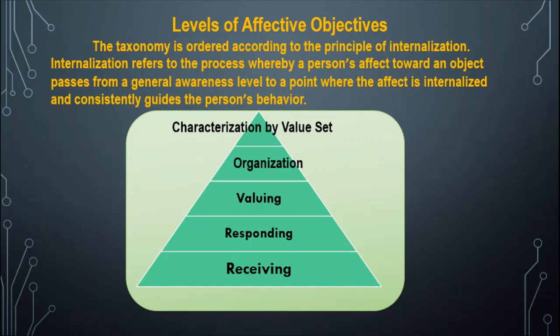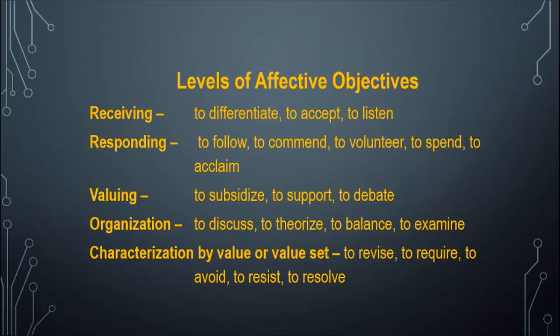Levels of affective objectives. The taxonomy is ordered according to the principles of internalization. Internalization refers to the process whereby a person's affect toward an object passes through a general awareness level to a point where the affect is internalized and consistently guides the person's behavior. The levels are: receiving — to differentiate, to attempt, to listen; responding — to follow, to command, to volunteer, to spend, to acclaim; valuing — to subsidize, to support, to debate; organization — to discuss, to theorize, to balance, to examine; characterization by value or value set — to revise, to require, to avoid, to resist, to resolve.